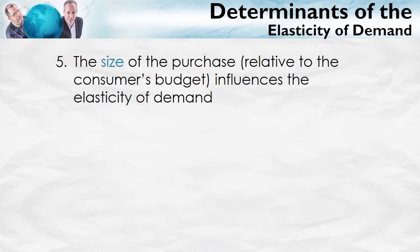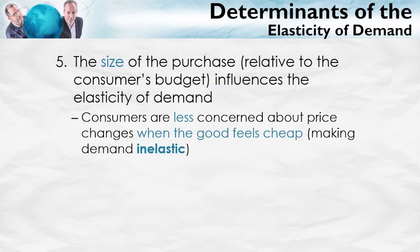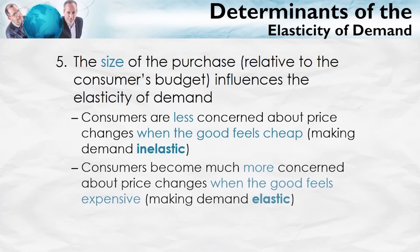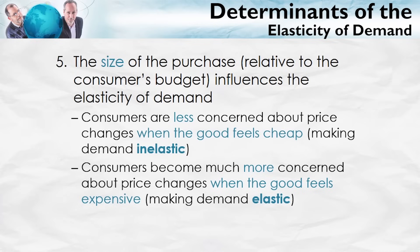The final determinant is the size of the purchase relative to a consumer's budget. If the purchase is small relative to the budget, consumers may not even notice when the price goes up, and if they don't notice, they won't respond with a big change in quantity demanded. On the other hand, consumers definitely notice when the price of automobiles goes up — that's a big purchase and they'll shop around. But when the price of toothpicks doubles from 50 cents to a dollar, consumers probably won't even notice. Small budget items tend to be more inelastic; larger budget items tend to be more elastic.